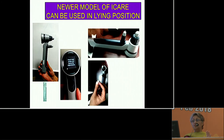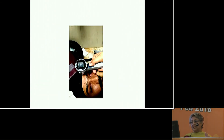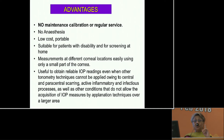The rebound tonometer — this is the newer model — has advantages including no maintenance, no calibration, no special surface required, no anesthesia needed, and is very low cost at approximately 3.5 lakh rupees. It is portable and suitable for patients with disability, including people with dementia. It can even be used for screening at home, and measurements can be taken at different corneal locations — for example, if there is a central corneal scar, you can take readings from the side and still get reliable IOP readings.